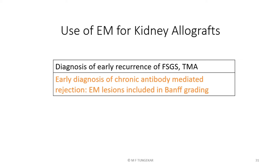We now come to the use of electron microscopy for biopsies of kidney allografts. Traditionally, EM was performed to detect recurrence of native disease in the transplant — for example, in a known case of FSGS, where within 48 hours of transplant, sudden onset of proteinuria occurs. Light microscopy and IF show no lesion, whereas EM shows diffuse effacement of foot processes, indicating early recurrence of FSGS. But during the last 10 years or so, it has been realized that you can make an early diagnosis of chronic antibody-mediated rejection, and electron microscopic lesions are now included in Banff grading of these biopsies.